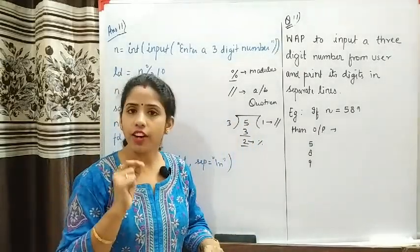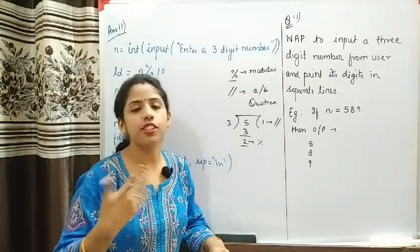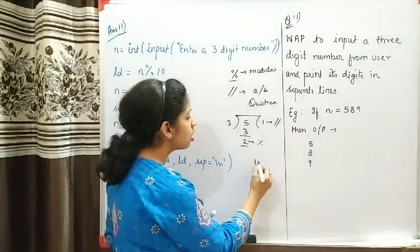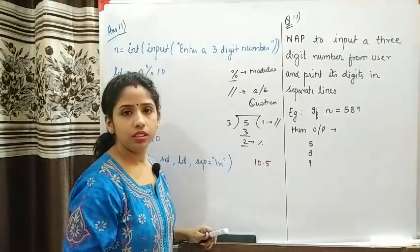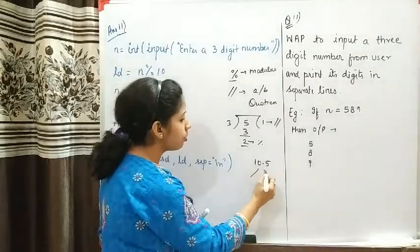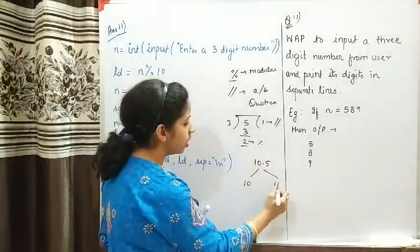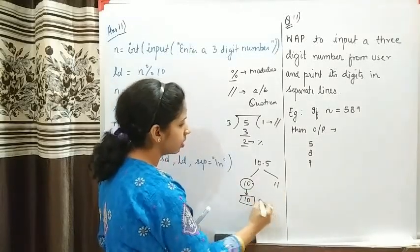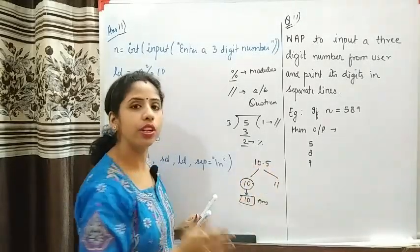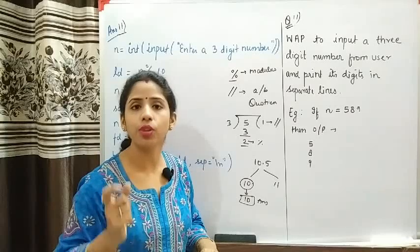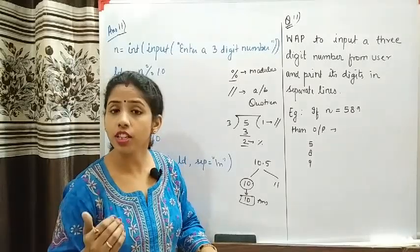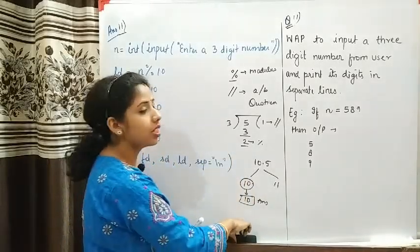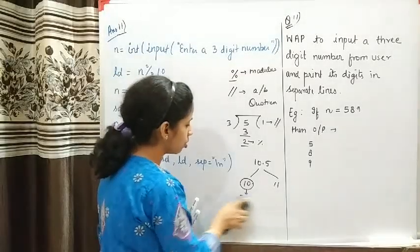Floor division converts a value to its integer form by taking the smallest nearest integer. For example, if the value is 10.5, the nearest integers are 10 and 11, but floor division gives 10 — the smallest nearest integer. Remember this logic, as we are going to apply it in the question.